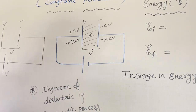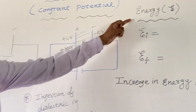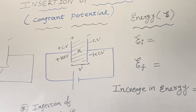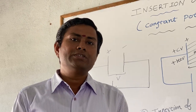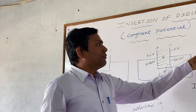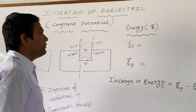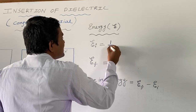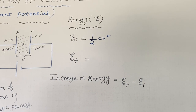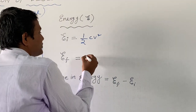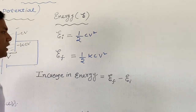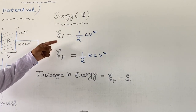After the insertion of the dielectric, the charge increases. The battery again removes some more charge from one plate and supplies it to the other — that is why the charge increases. Now we come to the discussion of energy. The energy stored between the plates of the capacitor is in the form of electrostatic potential energy. Before the insertion, that electrostatic potential energy is ½CV². After the insertion of the dielectric slab, the value becomes ½KCV².